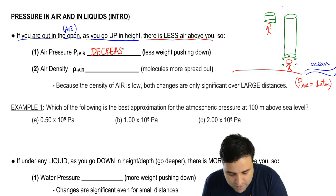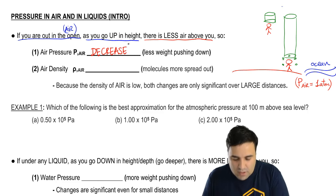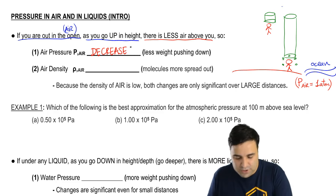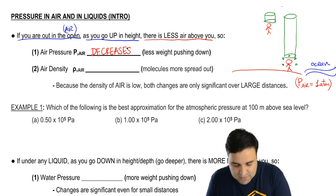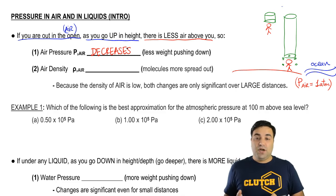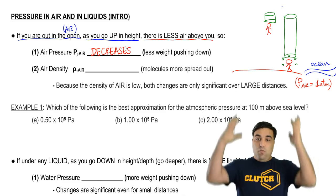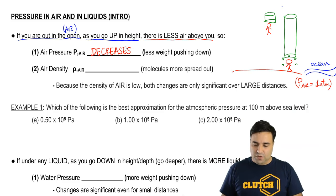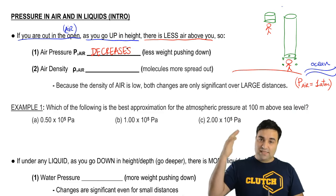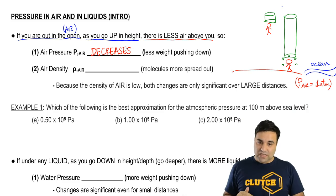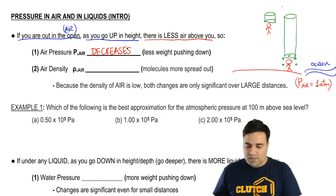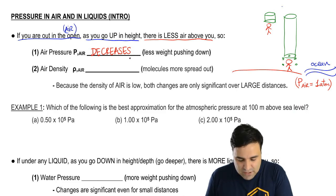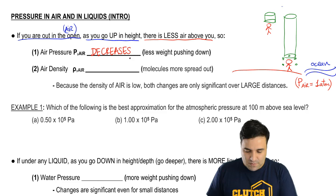Air pressure decreases because air pressure comes from the weight of air molecules on top of you. So if there's less air on top of you, there's less weight, so the air pressure decreases — because there's less weight pushing down on you.